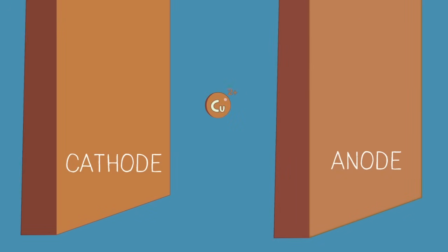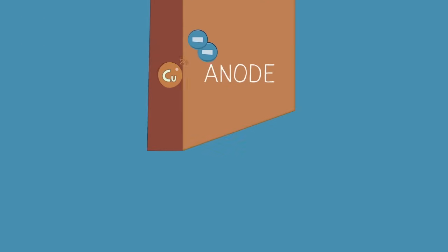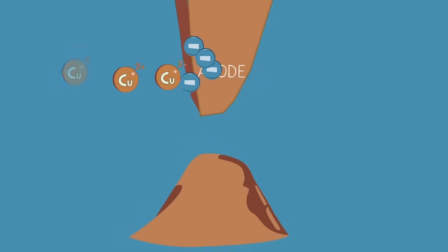When a copper ion is deposited at the cathode, another copper ion goes into solution at the anode. The concentration of the solution effectively stays the same. What do you notice happens to the anode? Pause the video and continue when you're ready.